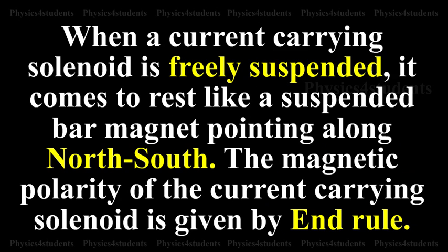When a current carrying solenoid is freely suspended, it comes to rest like a suspended bar magnet pointing along north-south. The magnetic polarity of the current carrying solenoid is given by end rule.